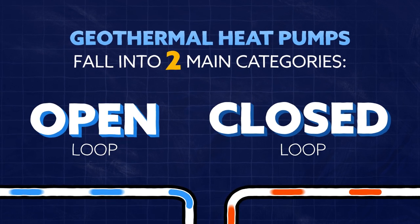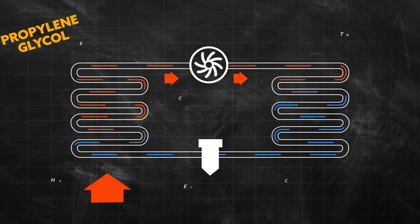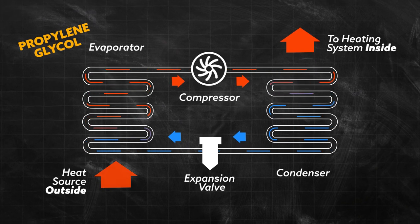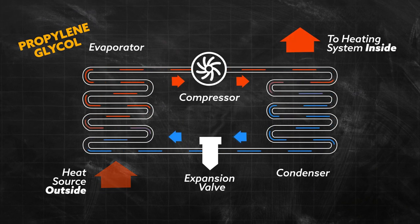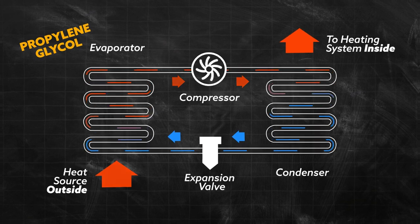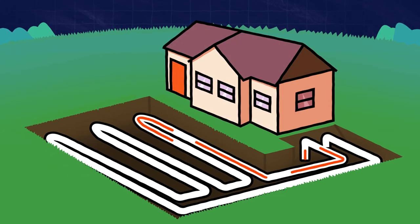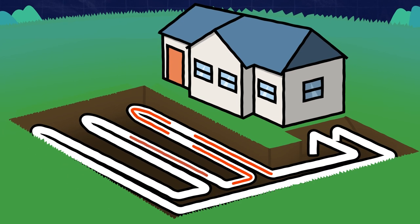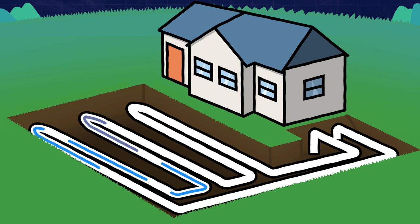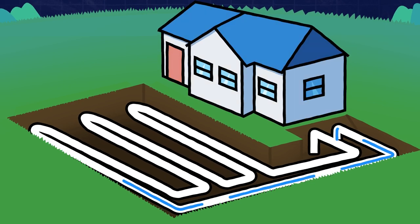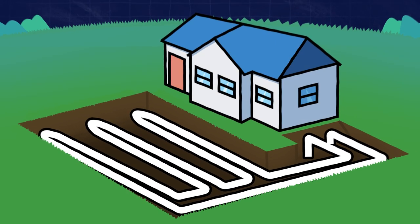A closed loop system uses a sealed network of pipes filled with a special fluid called propylene glycol. During the summer, the fluid in the loop absorbs the heat in your home and sends it underground. Then the ground's lower temperature cools it and sends cool air into your home.